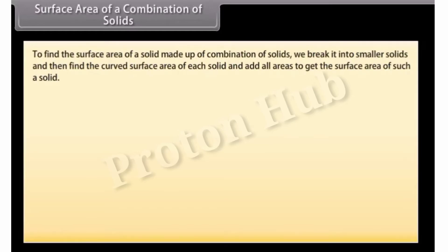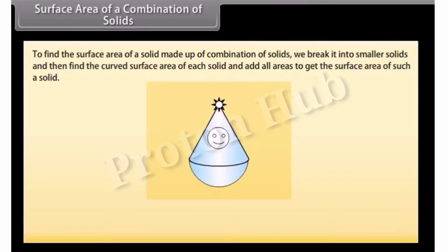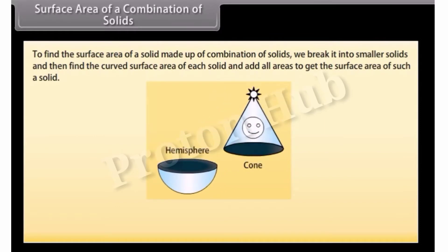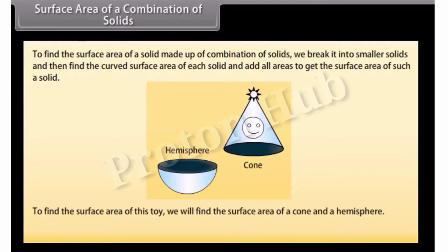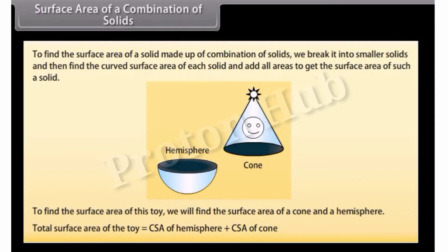To find the surface area of a solid made up of a combination of solids, we break it into smaller solids, and then find the curved surface area of each solid and add all areas to get the surface area of such a solid. For example, look at this toy. This toy is a combination of a cone and a hemisphere. The total surface area of the toy equals the curved surface area of the hemisphere plus the curved surface area of the cone. Let's solve some examples.